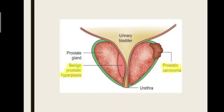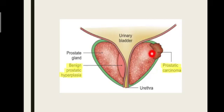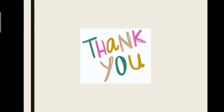Looking at this diagram, benign prostatic hyperplasia is presented on the median lobe, and prostatic carcinoma most commonly affects the posterior lobe. With this, we have completed the entire prostate gland topic. If you have any doubts regarding the topic, you can leave them in the comment box below and the team will get back to you. Thank you.